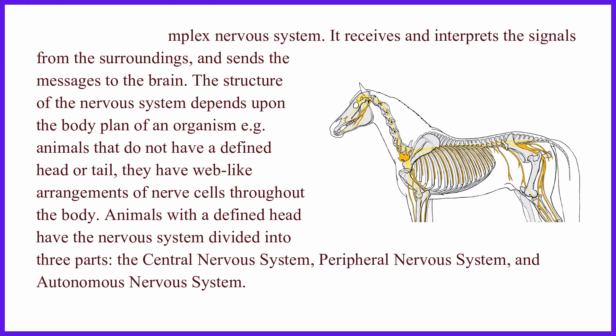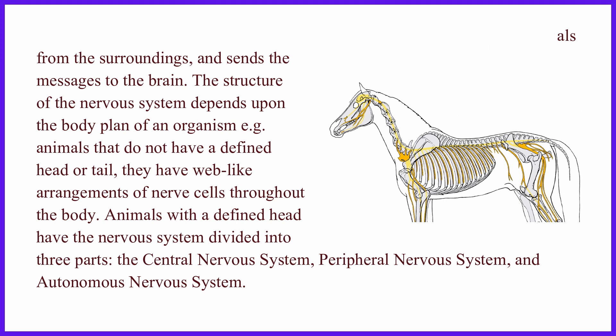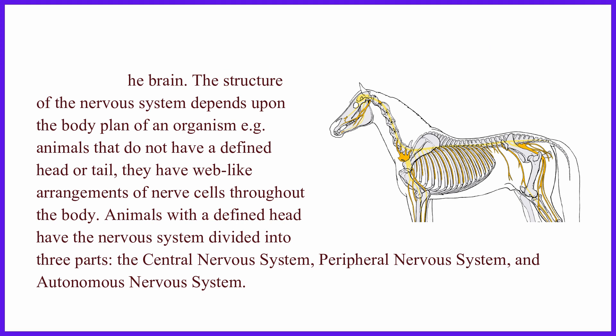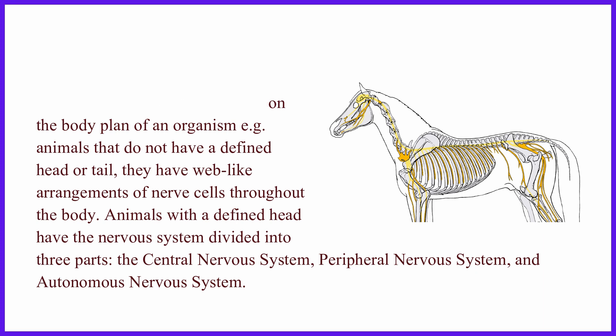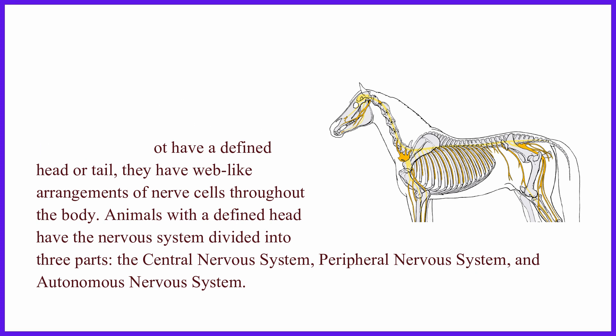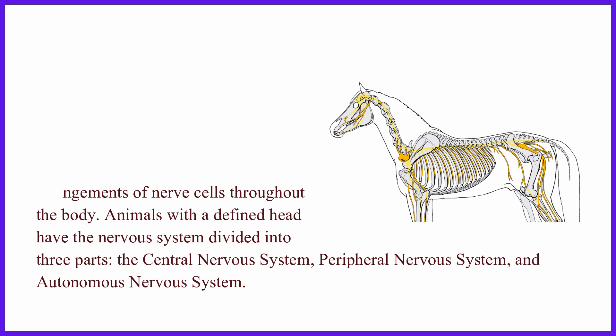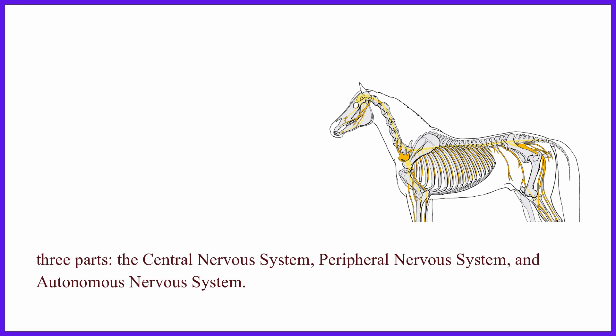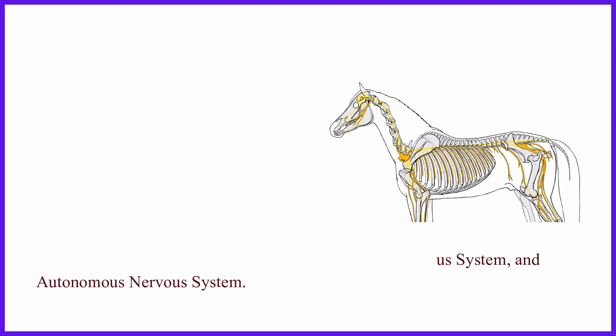Animals with a defined head have the nervous system divided into three parts: the central nervous system, peripheral nervous system, and autonomous nervous system.